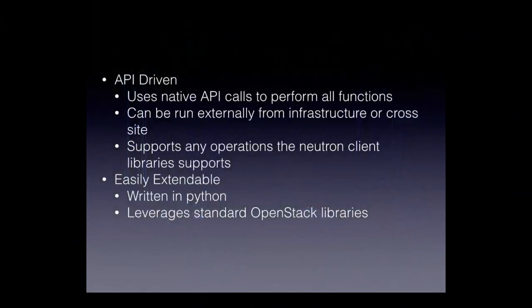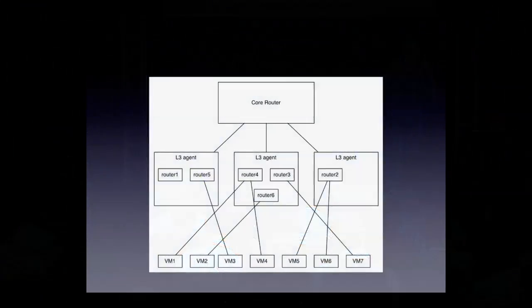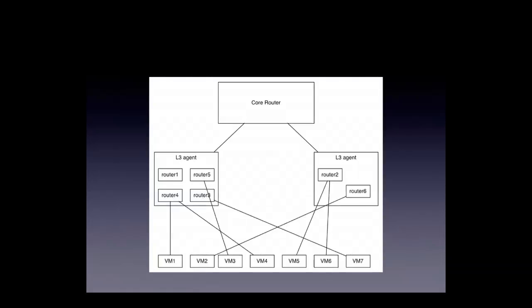It's easily extendable — written in Python using standard OpenStack libraries. Most importantly, it works on a per-resource level: it gets a list of all routers living on an L3 agent via the API and moves them one router at a time, giving per-router granularity instead of per-agent. So if we lose an L3 agent, the HA tool reschedules those routers onto agents still alive — more like RAID 5 or RAID 6. If you lose a disk, you move your data to disks that are still valid.